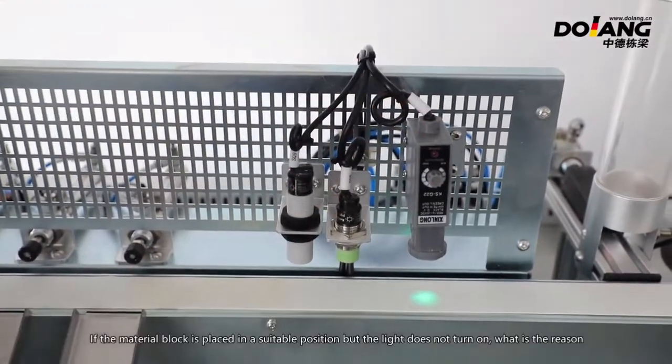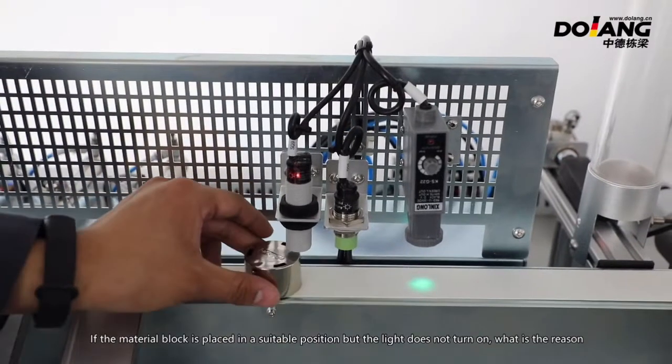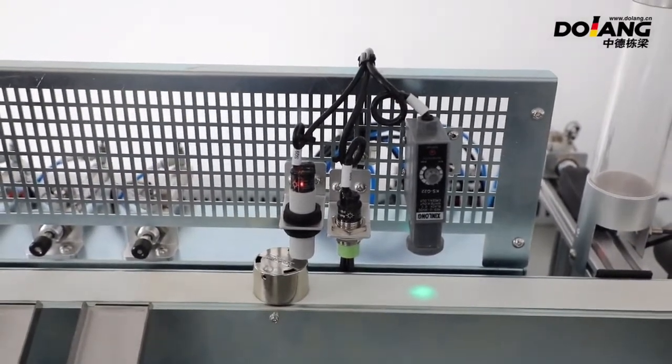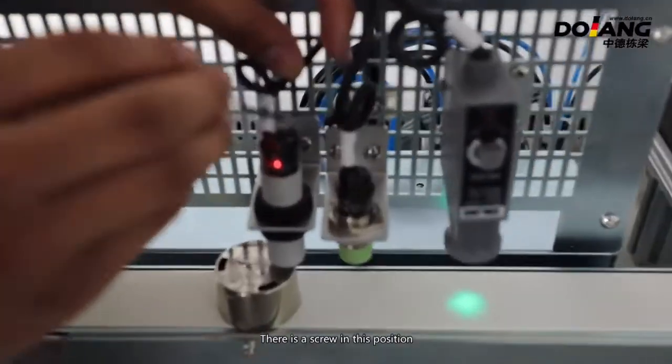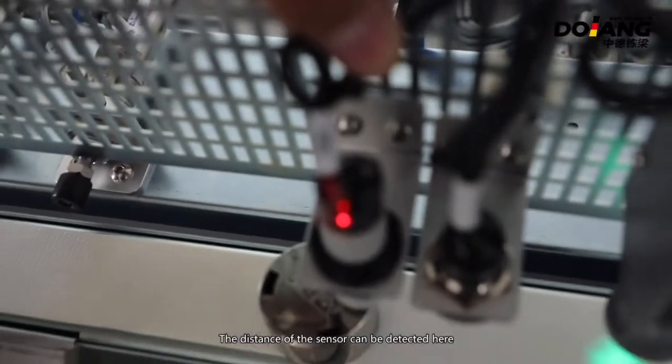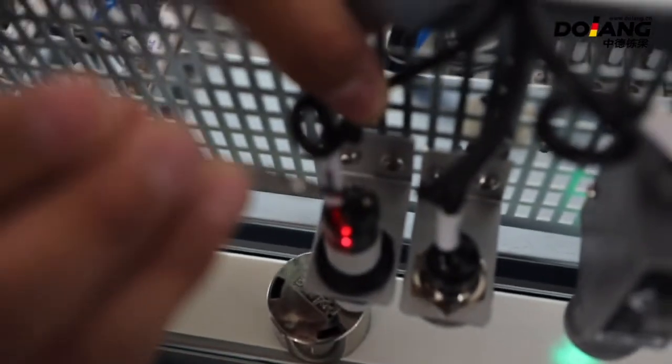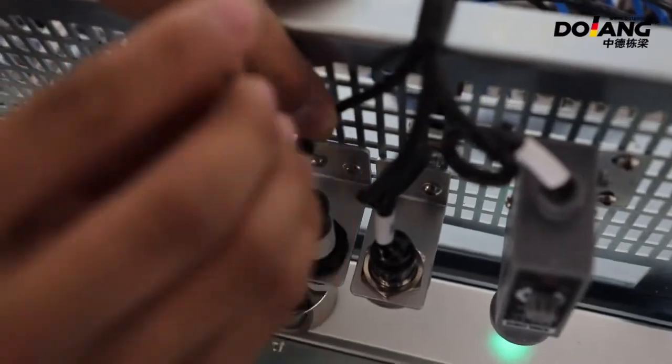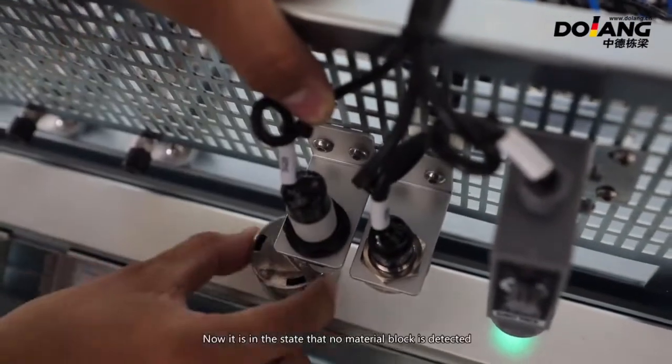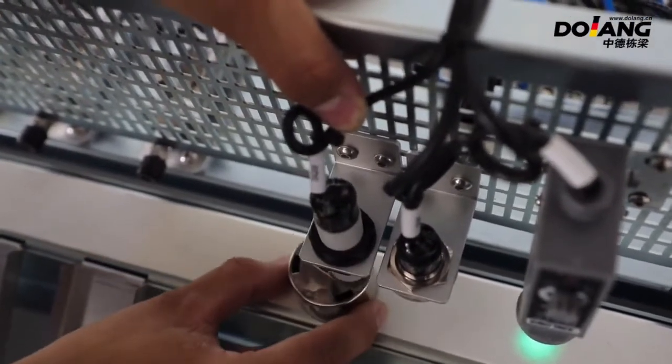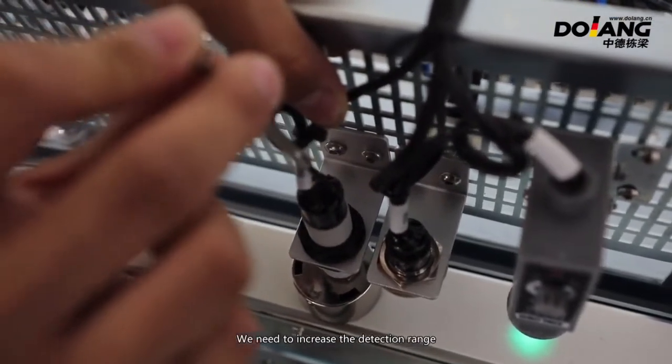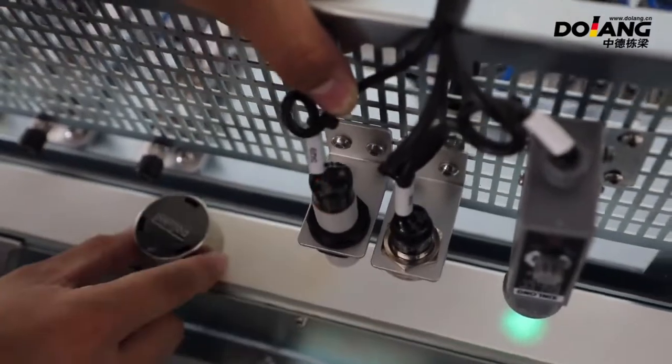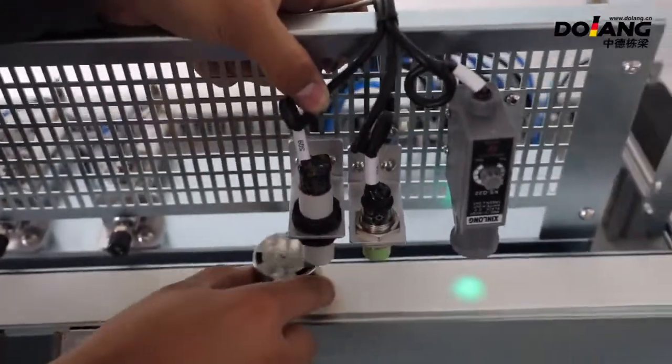If the material block is placed in a suitable position but the light does not turn on, what is the reason? There is a screw in this position. This determines the sensor detection distance. Twist it a little. Now it's in the state that no material block is detected. We need to increase the detection range. It's okay now.